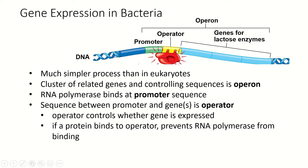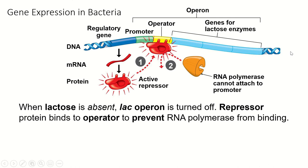It has to go from the promoter downstream. So if this bacterial cell is in an environment where there's no milk and no lactose to break down, then this repressor protein is going to bind to the operator and prevent RNA polymerase from even attaching to the promoter. RNA polymerase can't transcribe, and the enzymes for breaking down lactose can't be made in the cell.